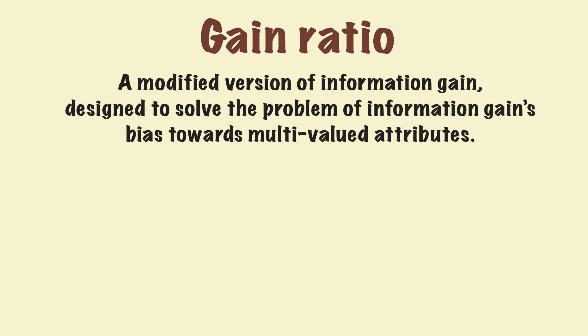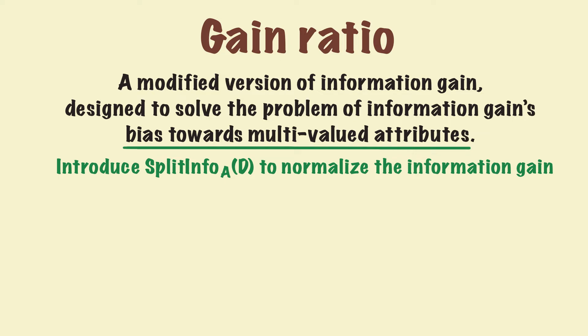To solve this problem, we introduce a new measure, gain ratio. But it's not a brand new measure, we just modify information gain a little bit. In fact, we only introduce one extra variable, split information of individual attributes. And we use this variable to normalize the information gain and to solve the bias issue.